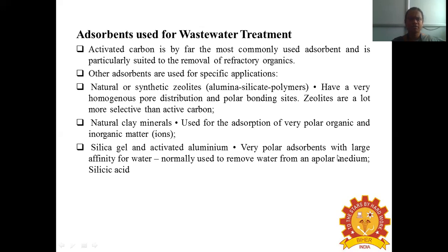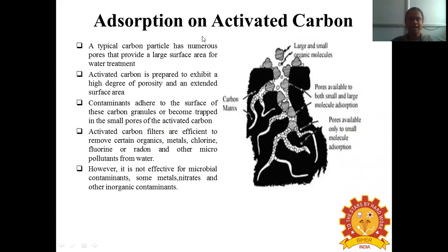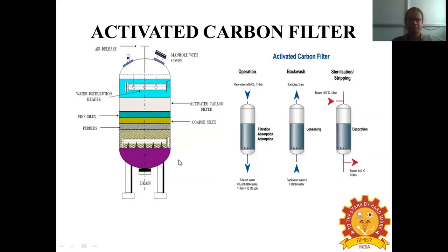Polar adsorbents with a large affinity for water, like silicic acid, are commonly used to remove water from an apolar medium. There are two types of adsorption: physisorption, which uses the principle of Van der Waals interaction, and chemisorption, which involves gas molecules or atoms being held by chemical bonds to the solid — for example, hydrogen chemisorbed on nickel. Activated carbon is the best adsorbent, providing a large surface area, high porosity, and an extended surface area. Activated carbon filters efficiently remove organics, metals, chlorine, fluorine, radon, and other micropollutants from water.